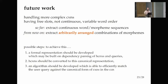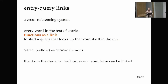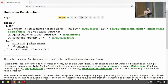Future work is to handle more complex constructions. A word about entry-query links: since we can process any kind of Hungarian text as a query, we can link all words in definitions and examples back to the resource itself. The canonical URI can be linked to any words.